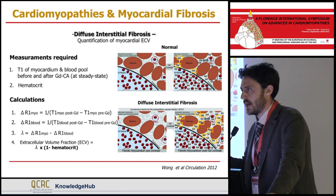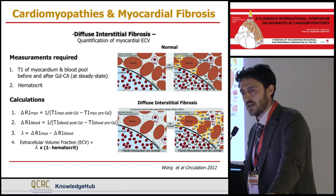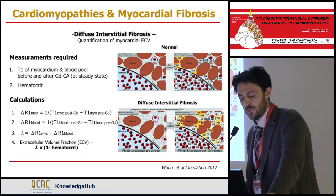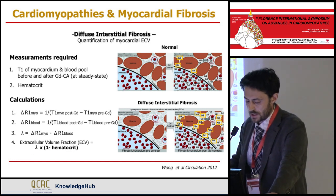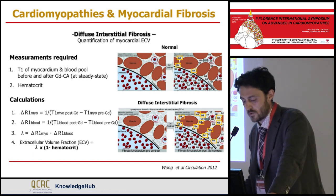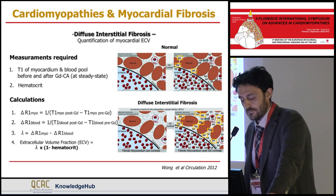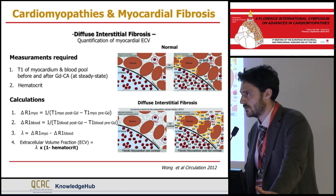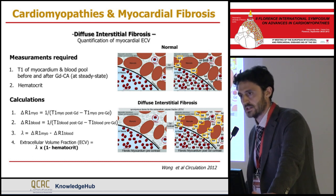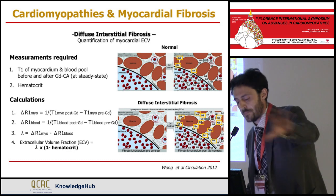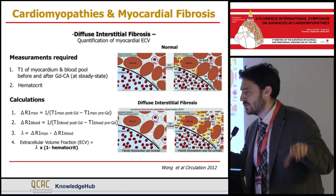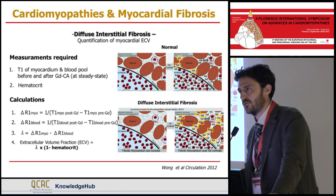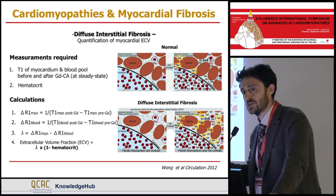This is not routinely done in clinical cardiac MRI, but can now be easily done with a new sequence. We also need a hematocrit measurement. Using a formula, we can detect what is called extracellular volume fraction. This formula corrects for confounding factors including the type of gadolinium used, the dose, the clearance of gadolinium from the body, and the volume of distribution.